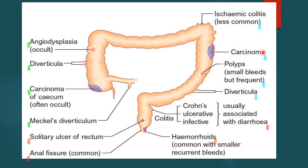On the left, highlighted in blue, are the four common causes of bleeding from the left side of the colon: ischemic colitis, carcinoma of the ascending colon, polyps of the descending colon, colonic diverticula involving the sigmoid and descending colon. At the terminal end, you have solitary ulcer of the rectum, anal fissures, hemorrhoids, and inflammation of the rectum and colon — either Crohn's disease, ulcerative colitis, infective causes, or radiation colitis.